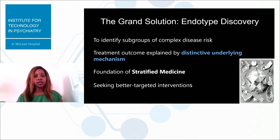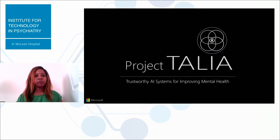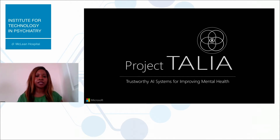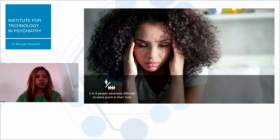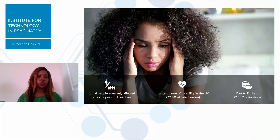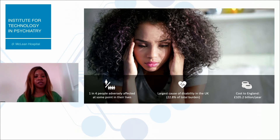Moving on to Project Talia — as I said before, the aim is to create trustworthy AI systems to improve mental health. Taking this concept of heterogeneity in response, can we use it as a route to personalizing interventions? We all know the statistics on mental health: one in four of us at some point in our lives will be affected by a mental health condition. In the UK it's the largest cause of disability, the number one reason for people calling in sick from work, and also a huge cost to the economy both in the UK and globally.